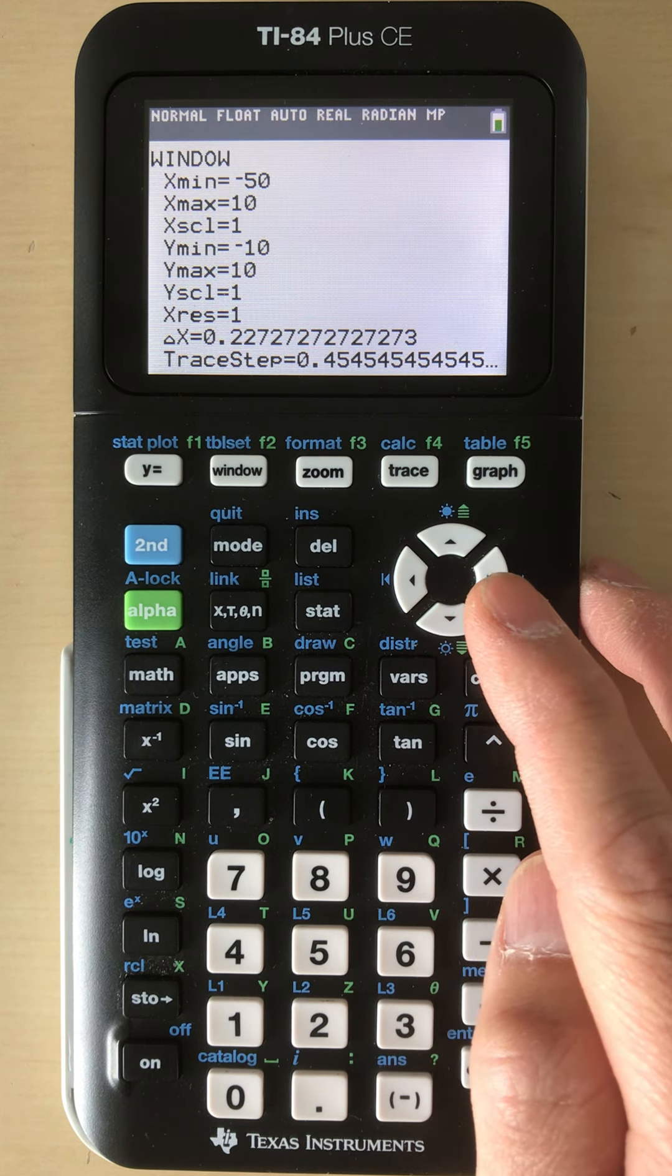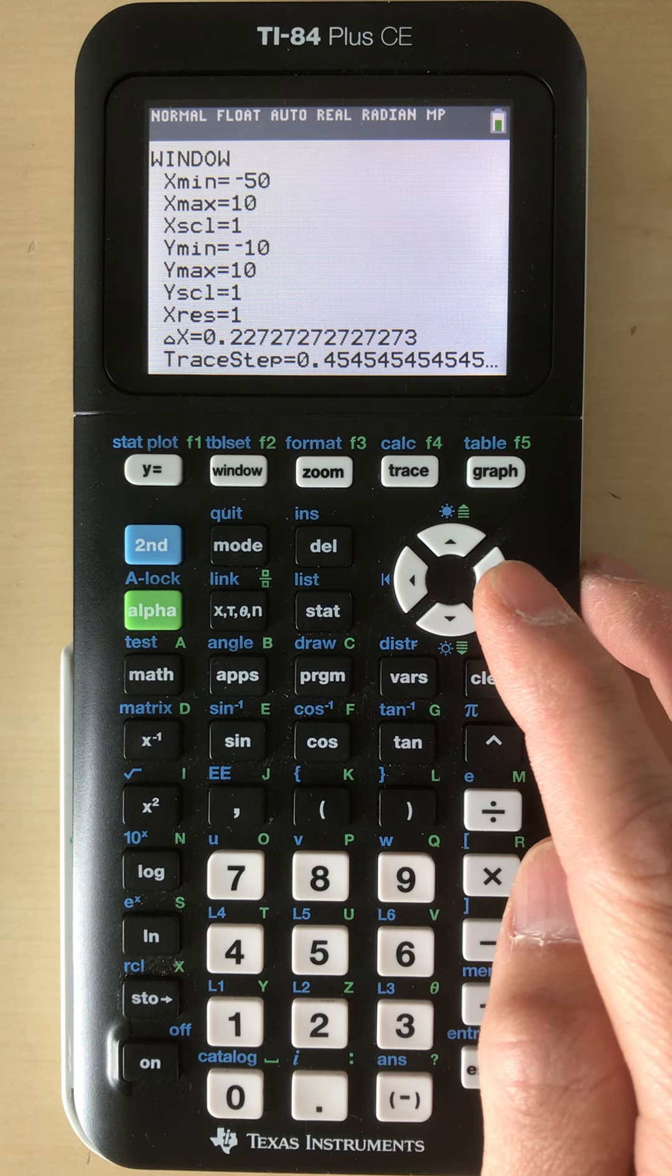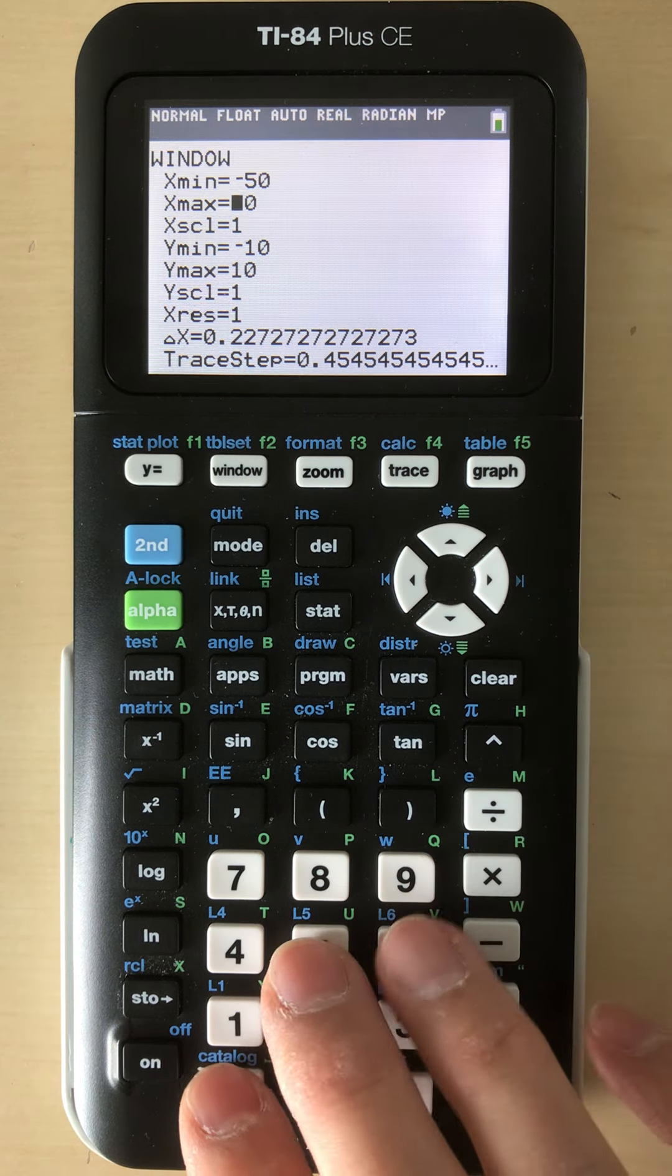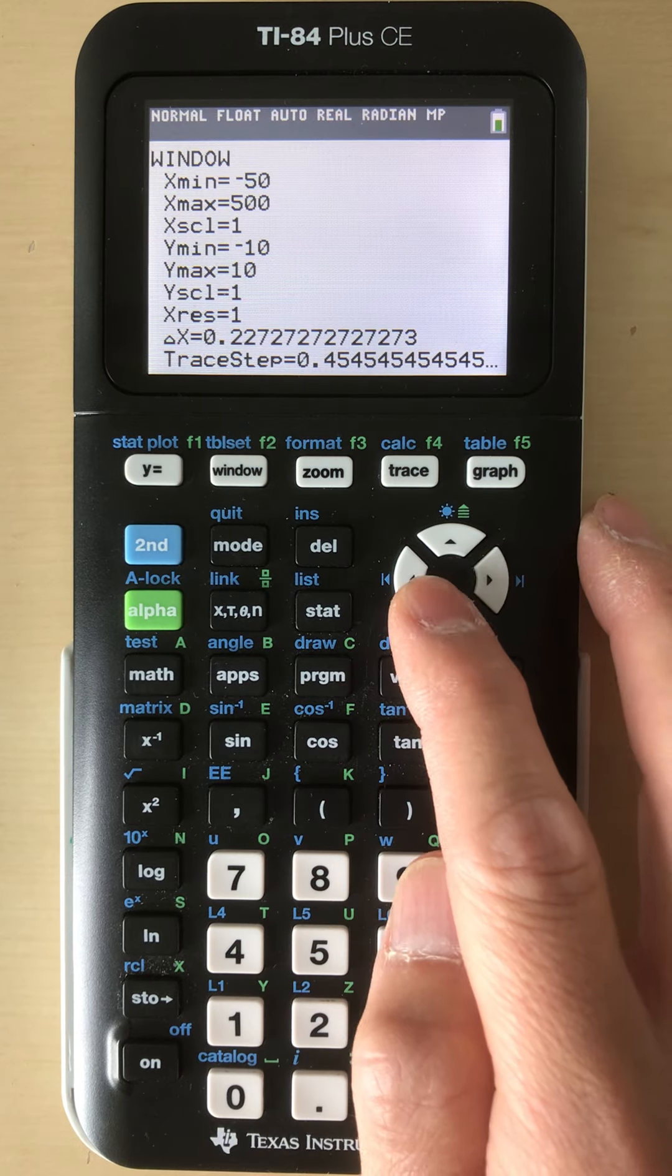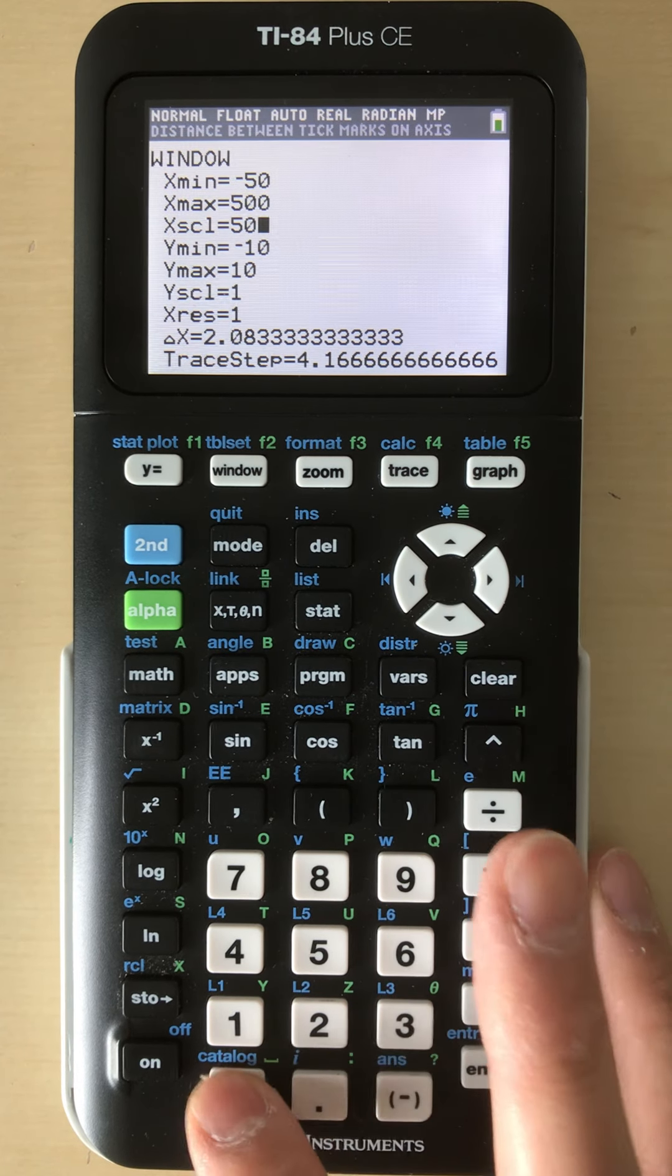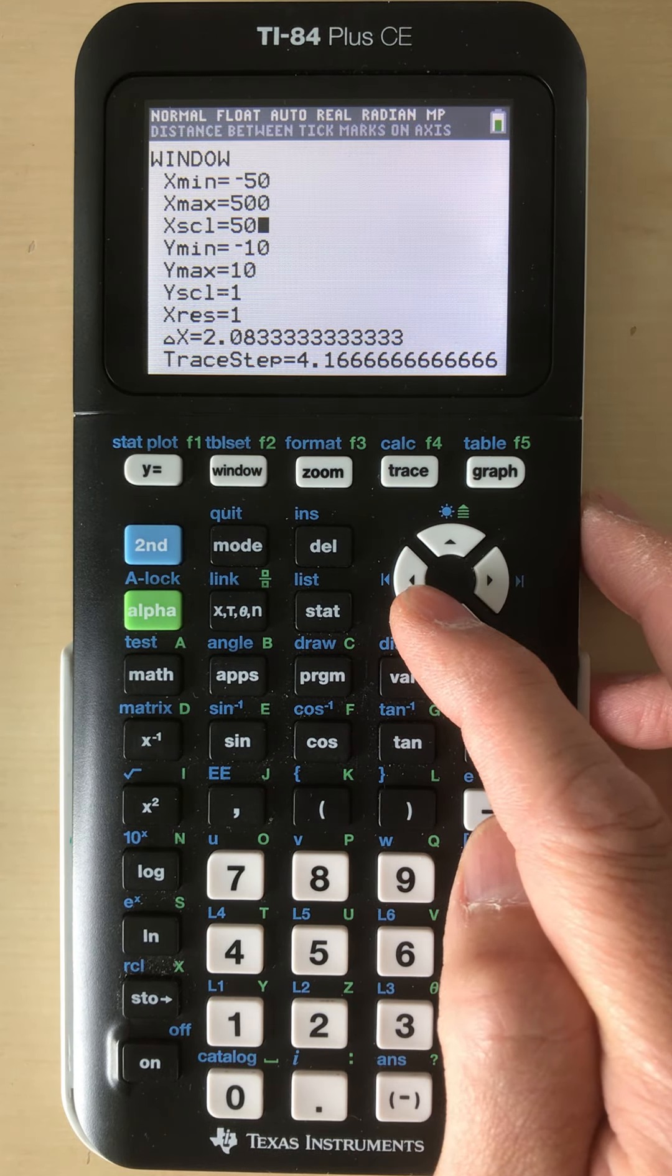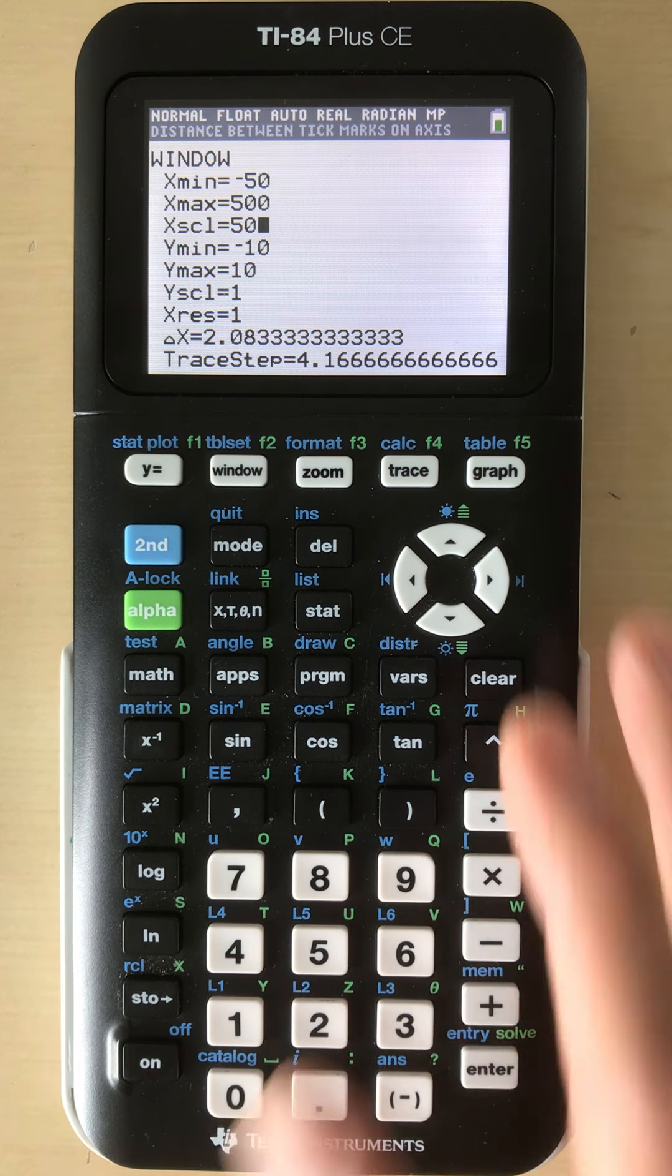The x maximum value—we have 600 meters of fencing roughly to deal with, so you can set it at 500 or 600. Let's do 500. I'm going to keep an x scale of 50 because we're talking small scale again, so it's a pretty large graph.